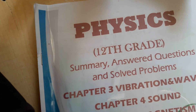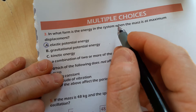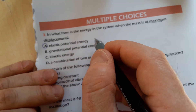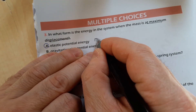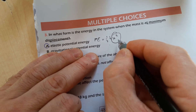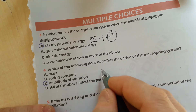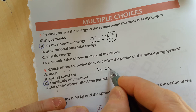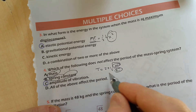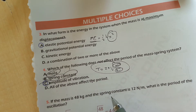Question three: when the spring-mass is at maximum displacement, what form is the energy in? Maximum displacement means the spring is stretched the most, so energy is elastic potential energy: ½kx². Question four: which of the following does not affect the period of a mass-spring system? Period = 2π√(m/k). Mass affects it; spring constant affects it; but amplitude of vibration does not appear in the equation. So amplitude does not affect the period.